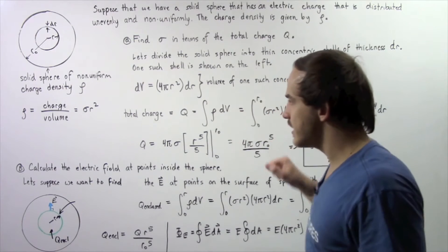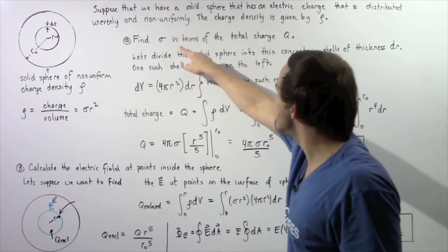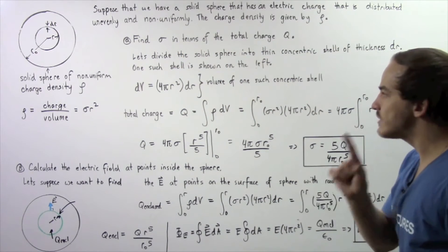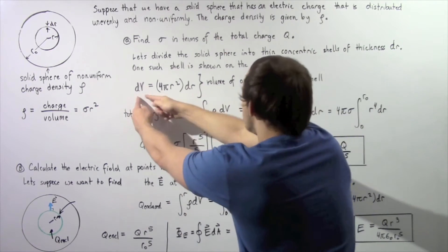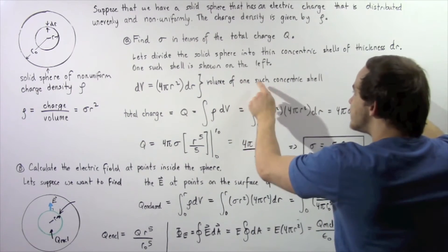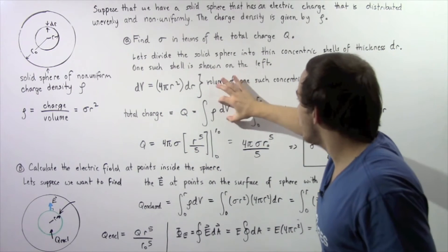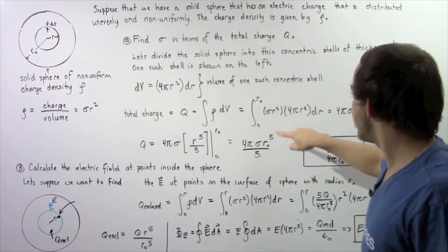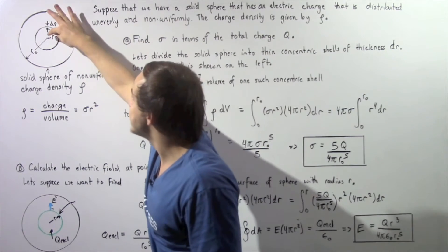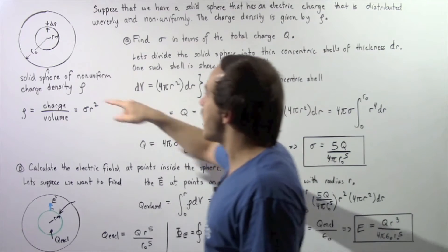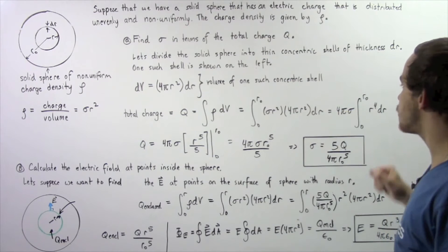We replace density rho with sigma times r squared, since we want to find sigma in terms of q. We also replace dV with the surface area times dr, giving us 4πr² dr. Then we integrate from zero at the center of the sphere out to r-naught at the edge.